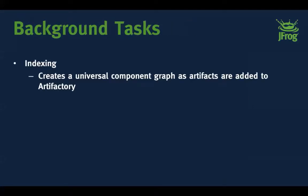There are a couple of background tasks X-Ray performs. First is indexing: you decide what to index — one repository, multiple repositories, all repositories, one build, multiple builds, or all builds in Artifactory. This flexibility exists because you may have millions of artifacts not all utilized in production. These tasks are resource-heavy, so you don't want to waste resources scanning things that won't be used.